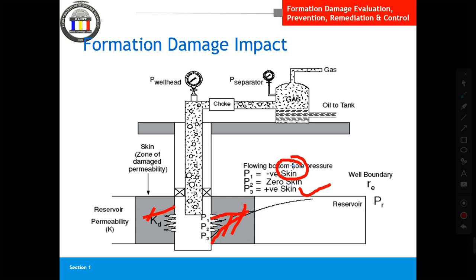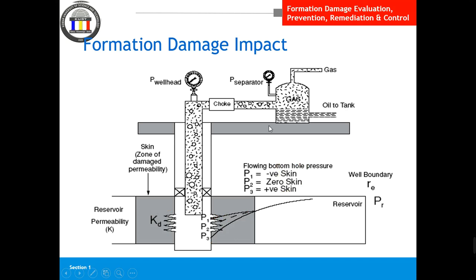Negative skin means the well has more permeability than normal — this happens only when you do a stimulation job or when the formation has lots of fractures. Zero skin means original formation permeability with no stimulation and no damage. When there is severe formation damage, a skin of 10 can cause production to decline around 40–60 percent. For example, a skin of 20 means production may decline more than 50 percent — a well capable of 1,000 barrels per day may only produce around 400 to 450 barrels per day.